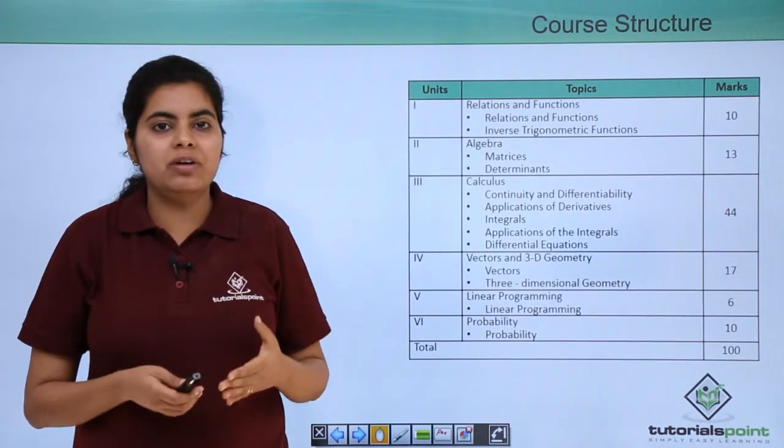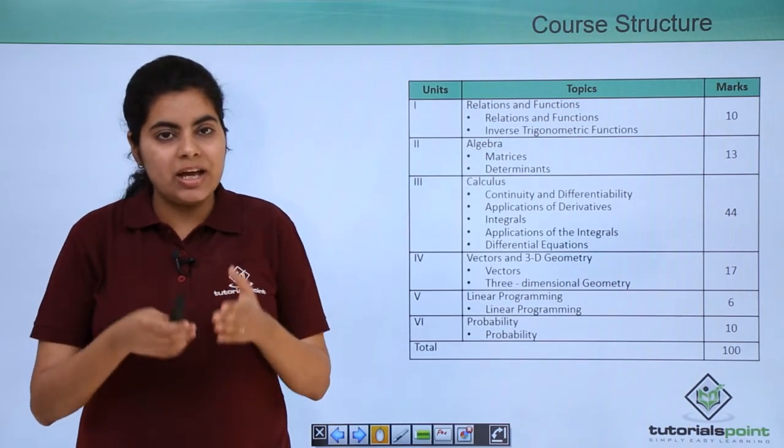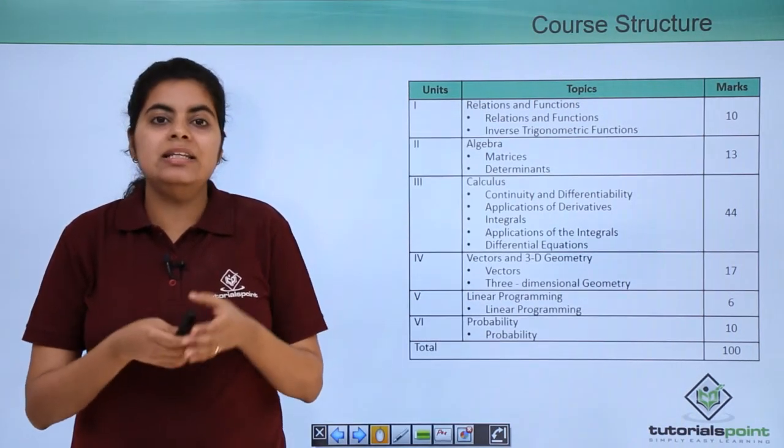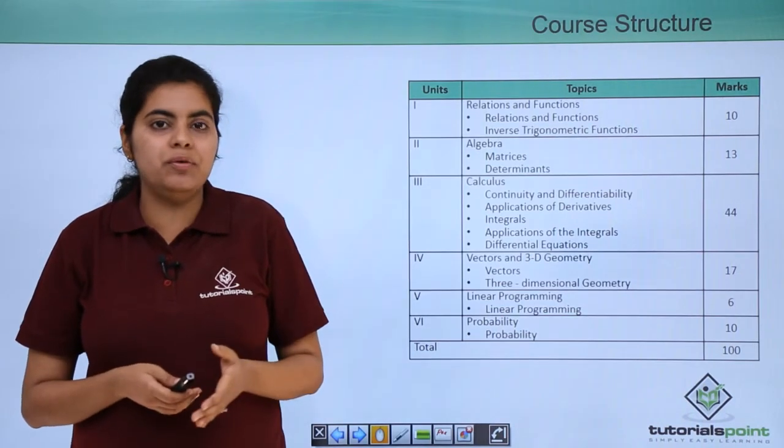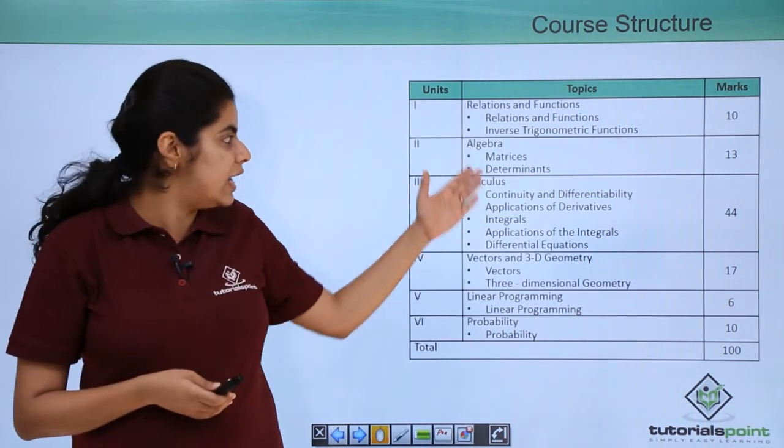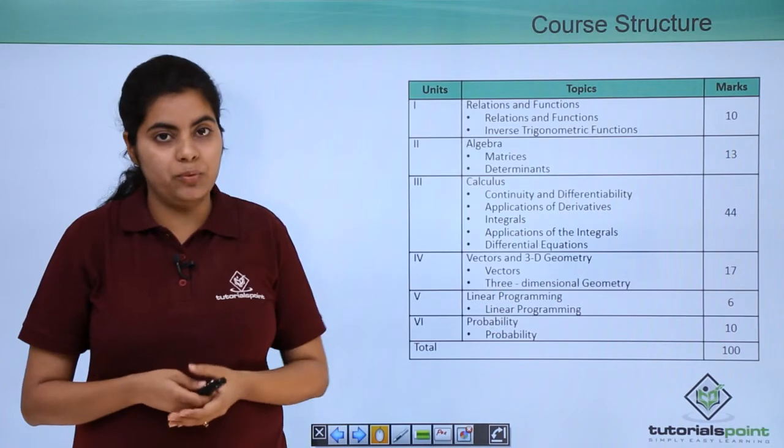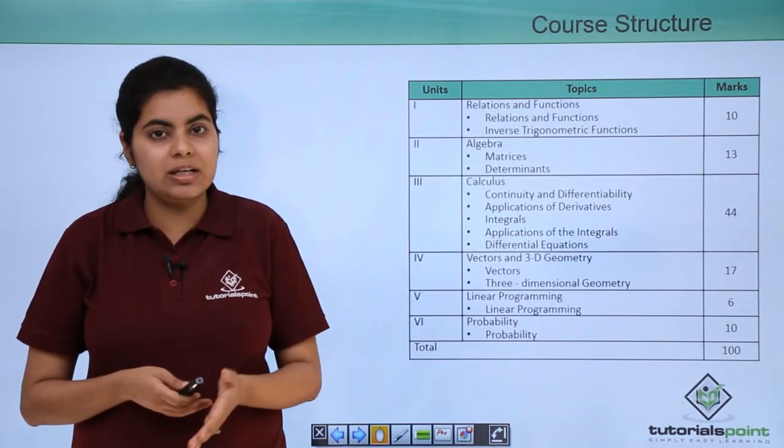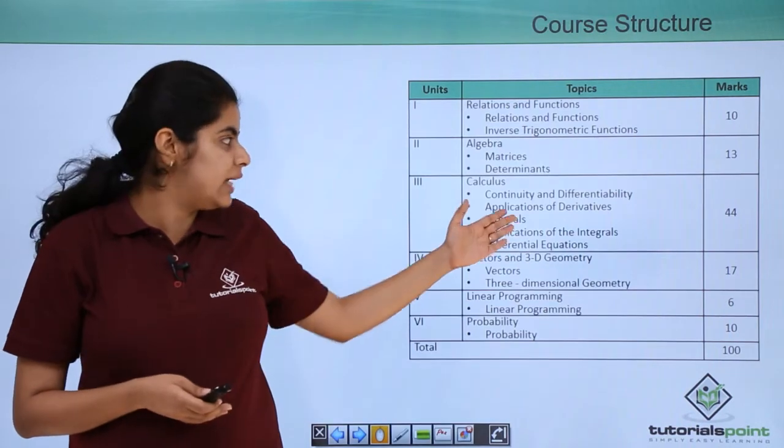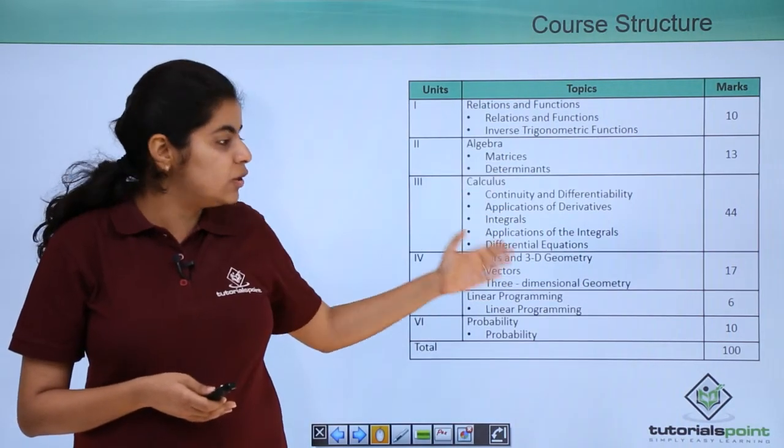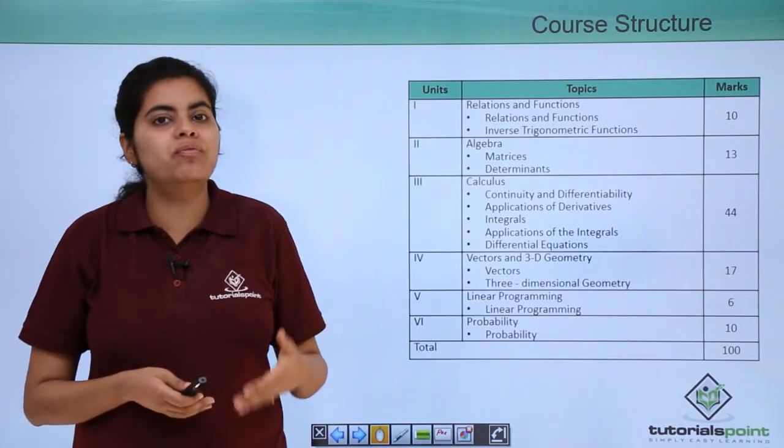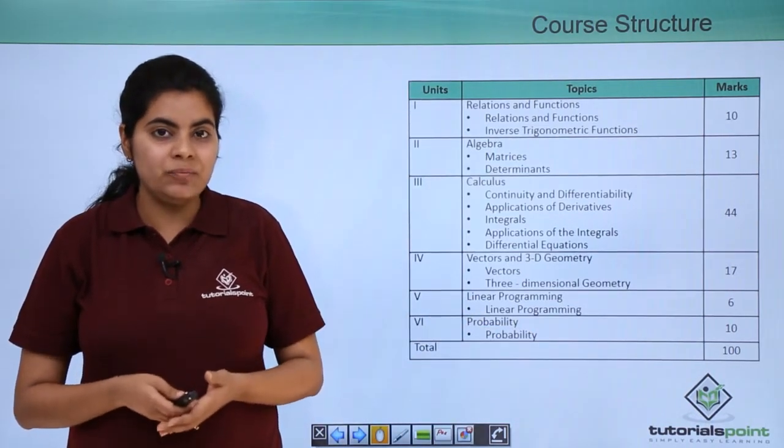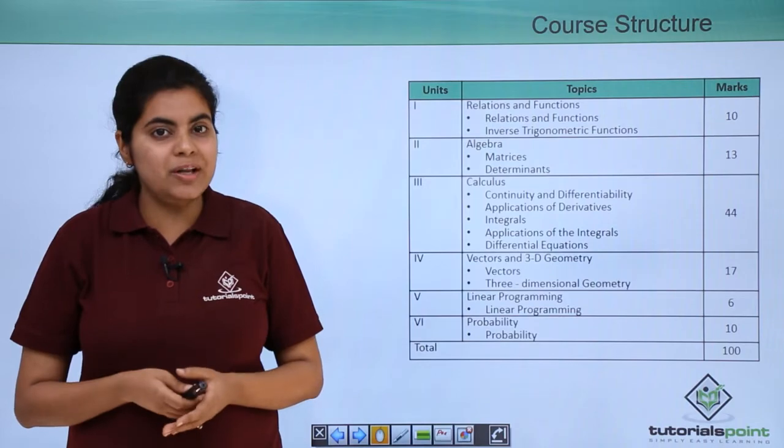So after we have covered all these things I just need to mention two three things in particular again: that the easiest unit that you would find would be according to me algebra and linear programming. The most important one although you find difficult you have to cover it full is your calculus. And after you have covered all these three units you can go for vector 3D, relation functions and probability. So the syllabus, the brief introduction is done.